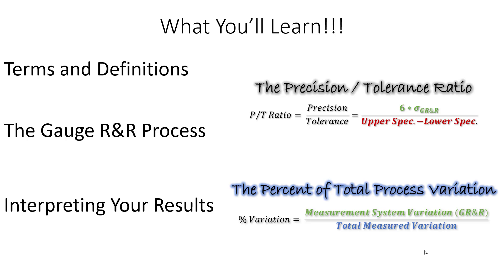In today's video, we're going to go through the precision tolerance ratio and the percent of total process variation. I'm going to talk about when you'd use them, why you'd use them, how to make the calculations, as well as how to interpret the value at the end of the calculation and some of the risks associated with mediocre gauge R&R values.